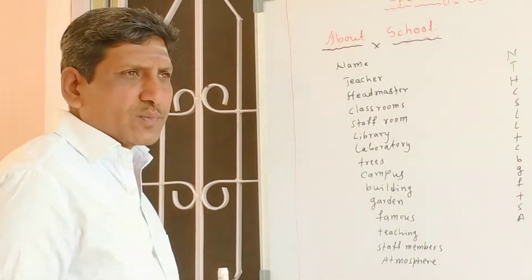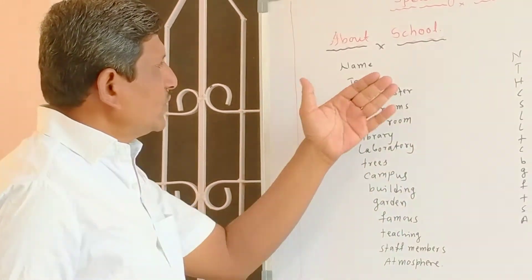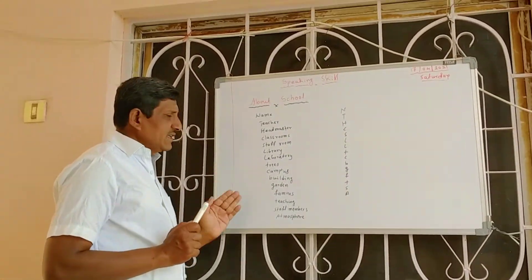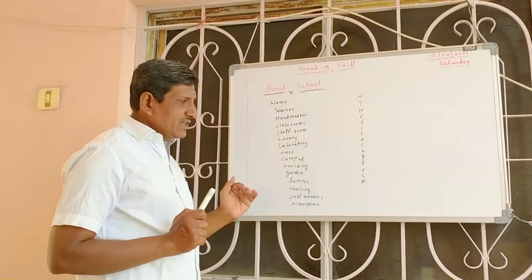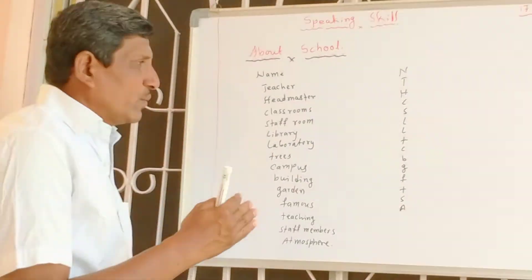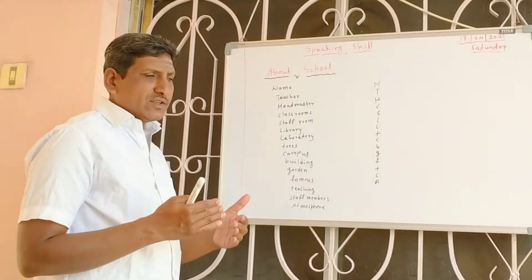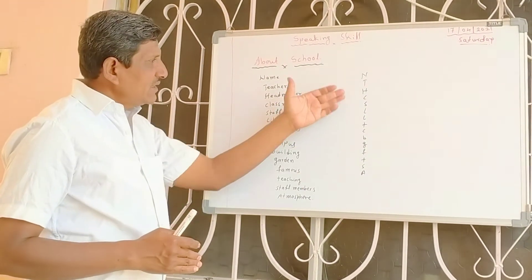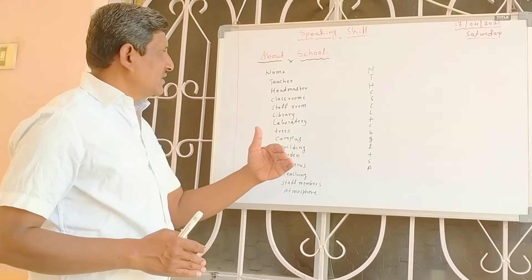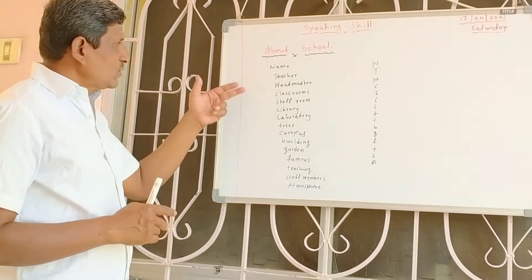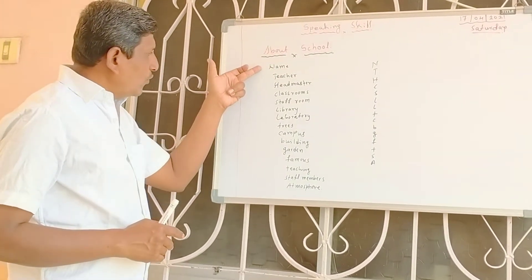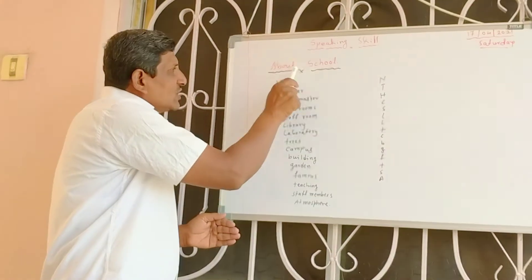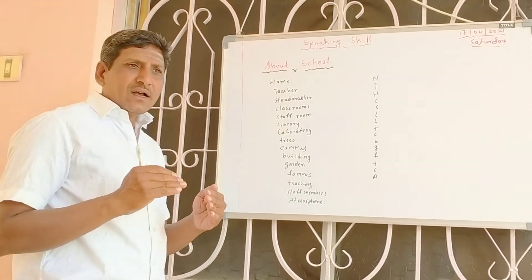My school has the best atmosphere for the learners. Dear students, the sentences I have made are useful to you. As teachers, we should give words or letters, and these are helpful for students to make sentences about the school. This is one method to improve the speaking skill among students.